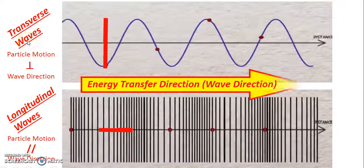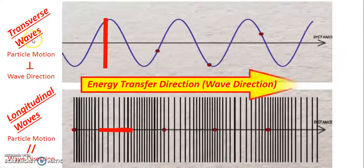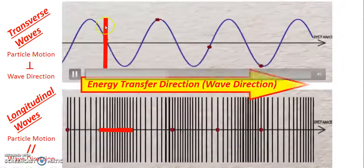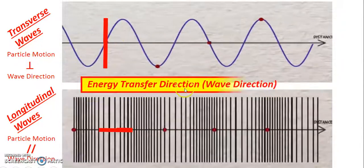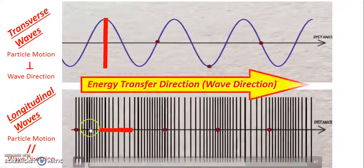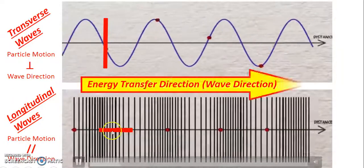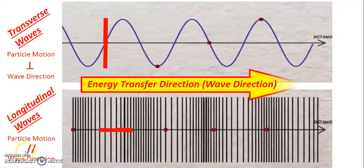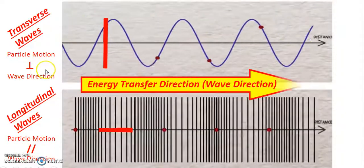And the differences between these two waves will be that transverse waves, the particle motion actually moves perpendicular to my wave direction, whereas a longitudinal wave, the particle motion, seen by this line, is moving in the parallel direction to the direction of wave motion.